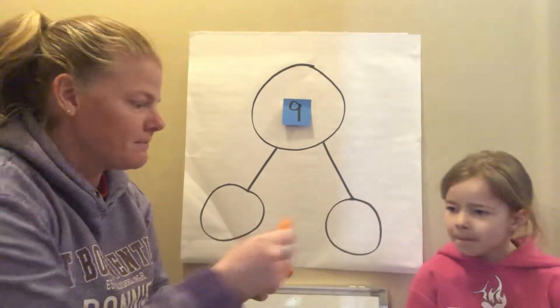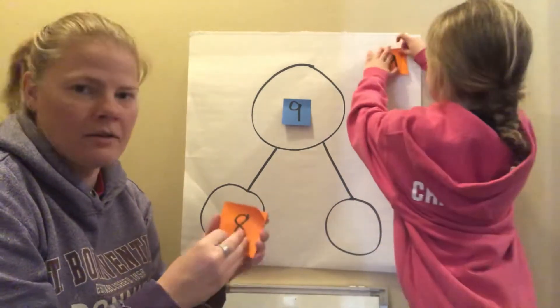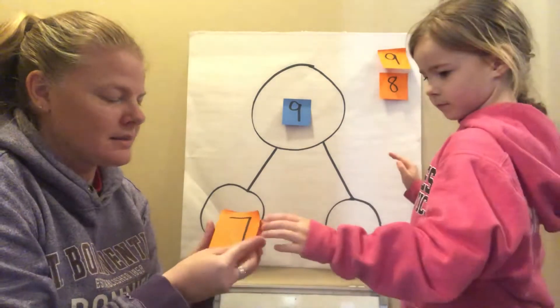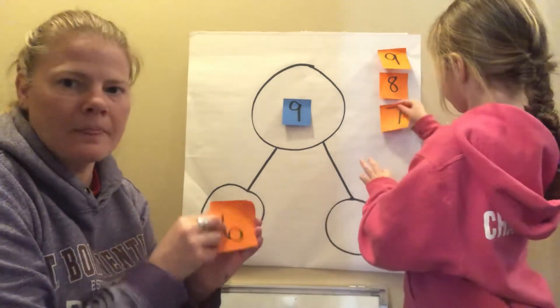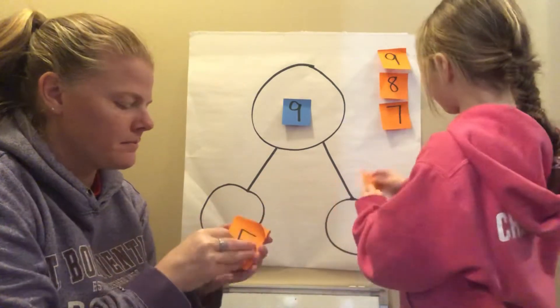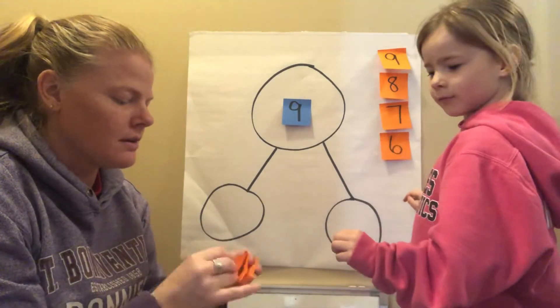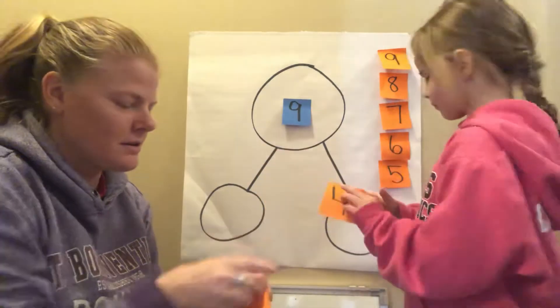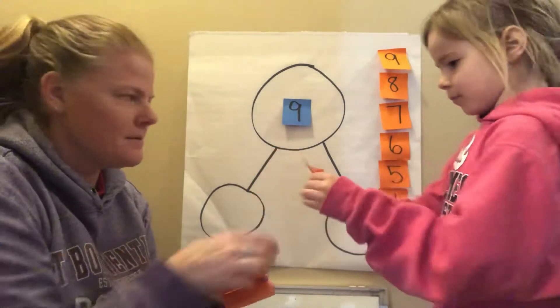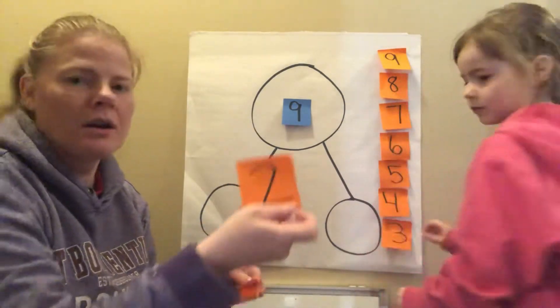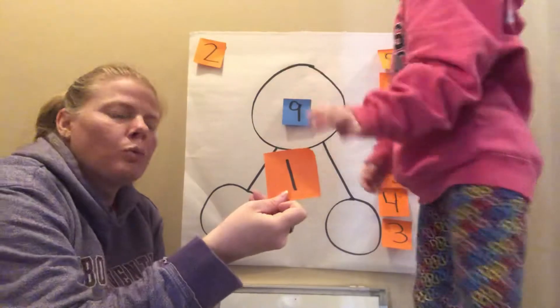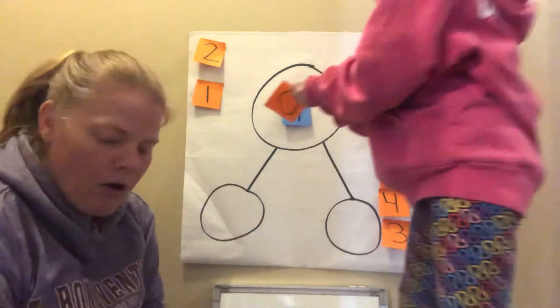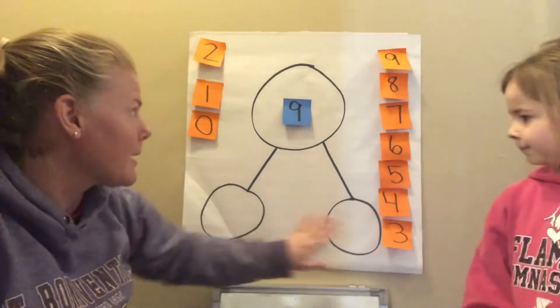So we have nine. Let's count backwards. Help me count backwards friends. Eight, seven, six, they're stuck, five, four, three, two, one, and zero. Those are all the numbers I may need to use to put in for my parts.